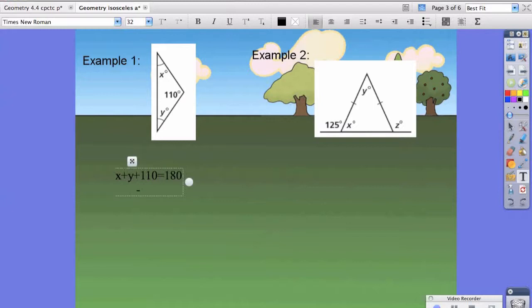If I subtract 110 from both sides, that means X plus Y is equal to 70. And if X and Y are congruent, that means X is equal to 35 degrees and Y is equal to 35 degrees because it's isosceles.